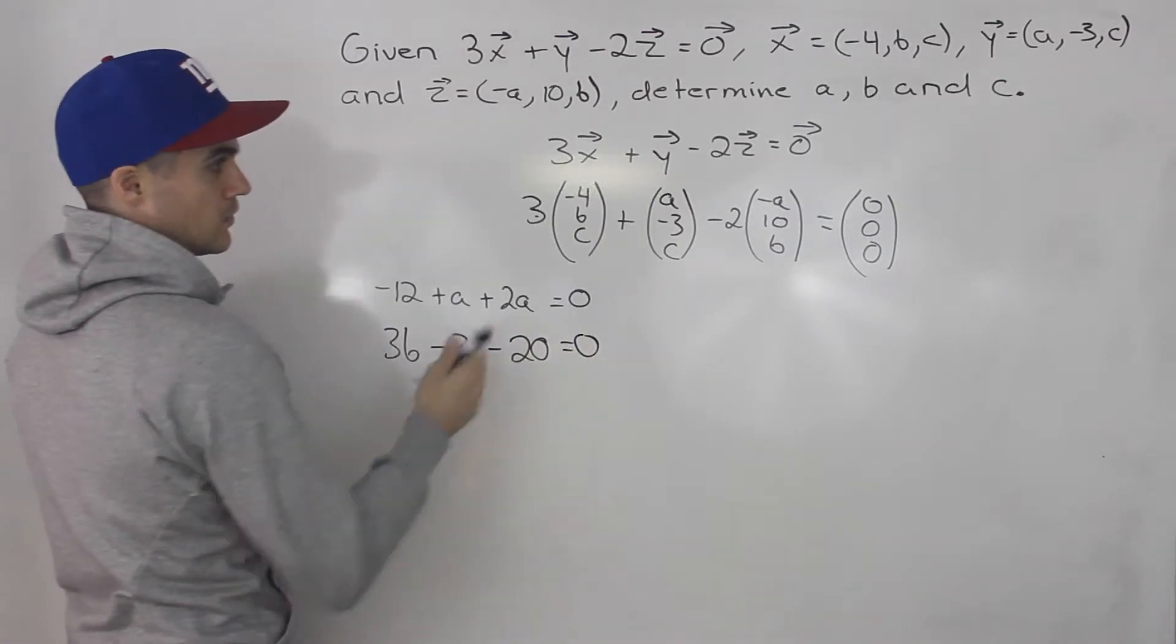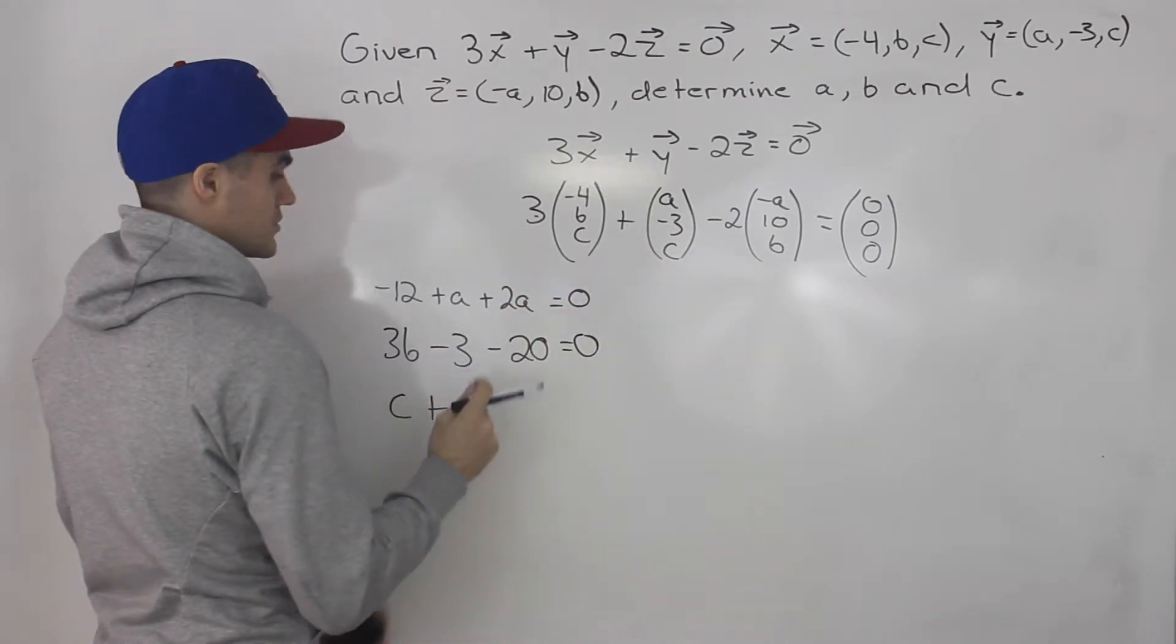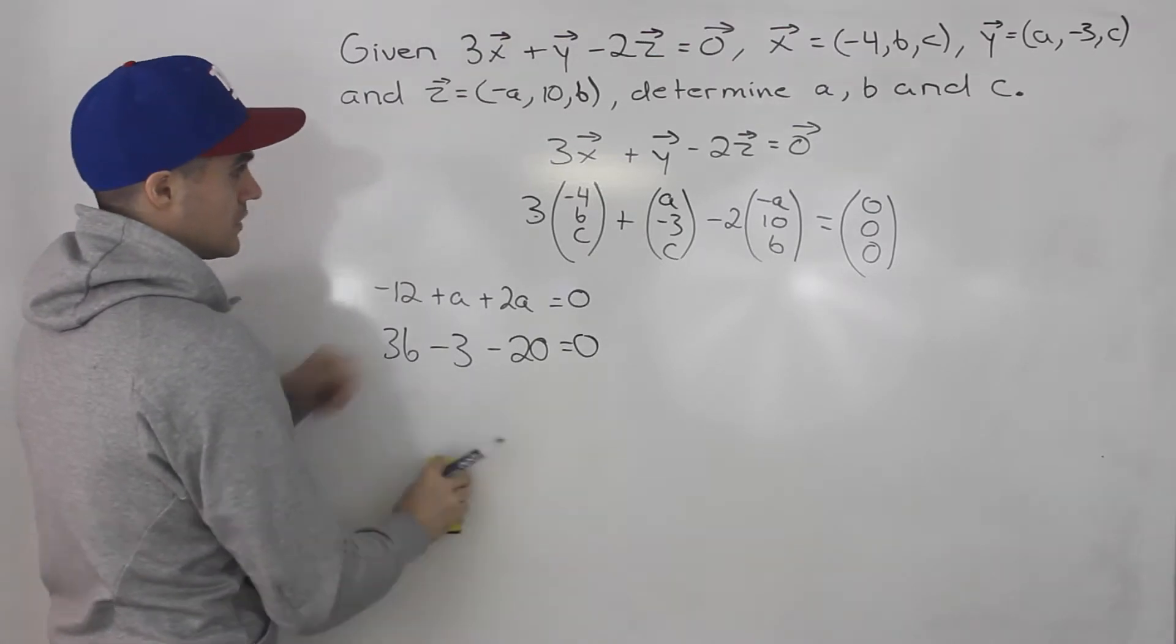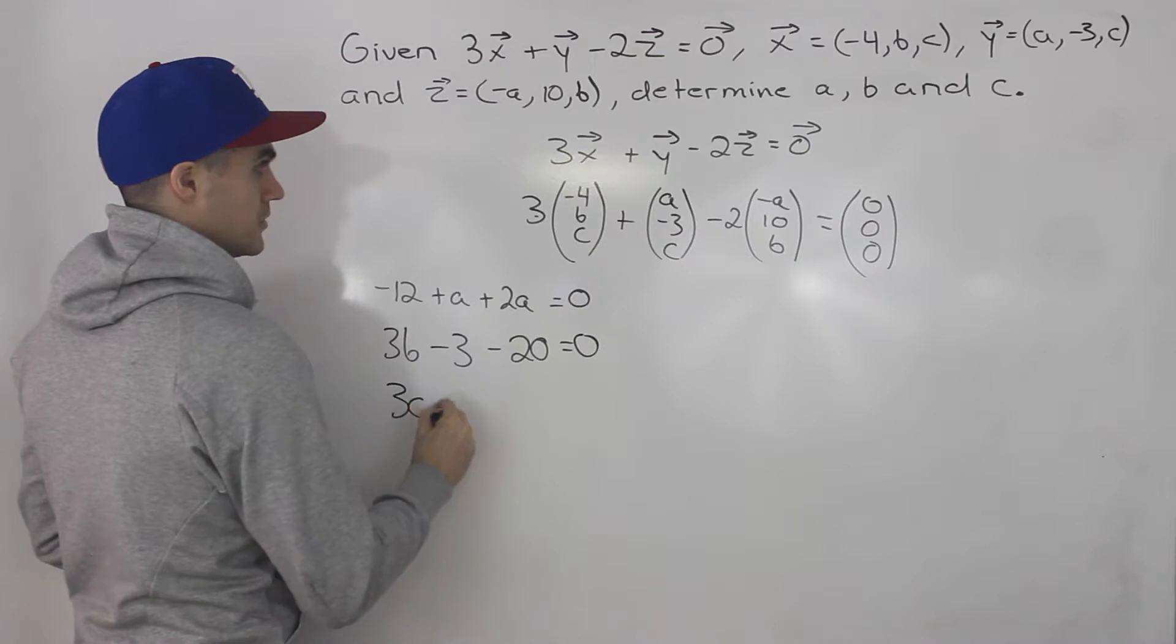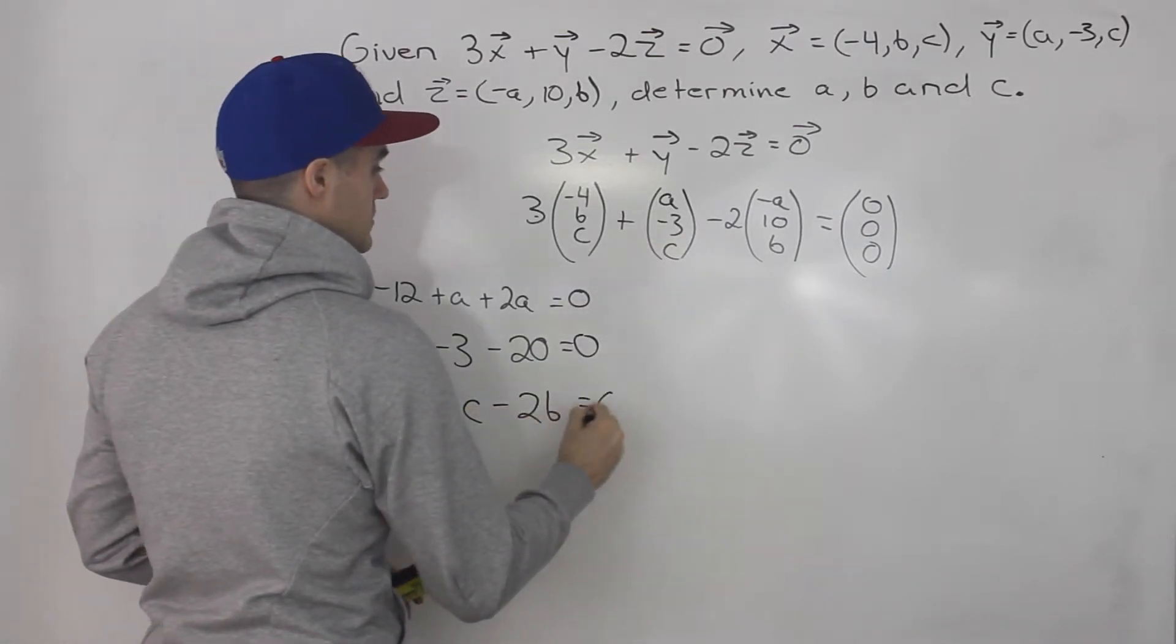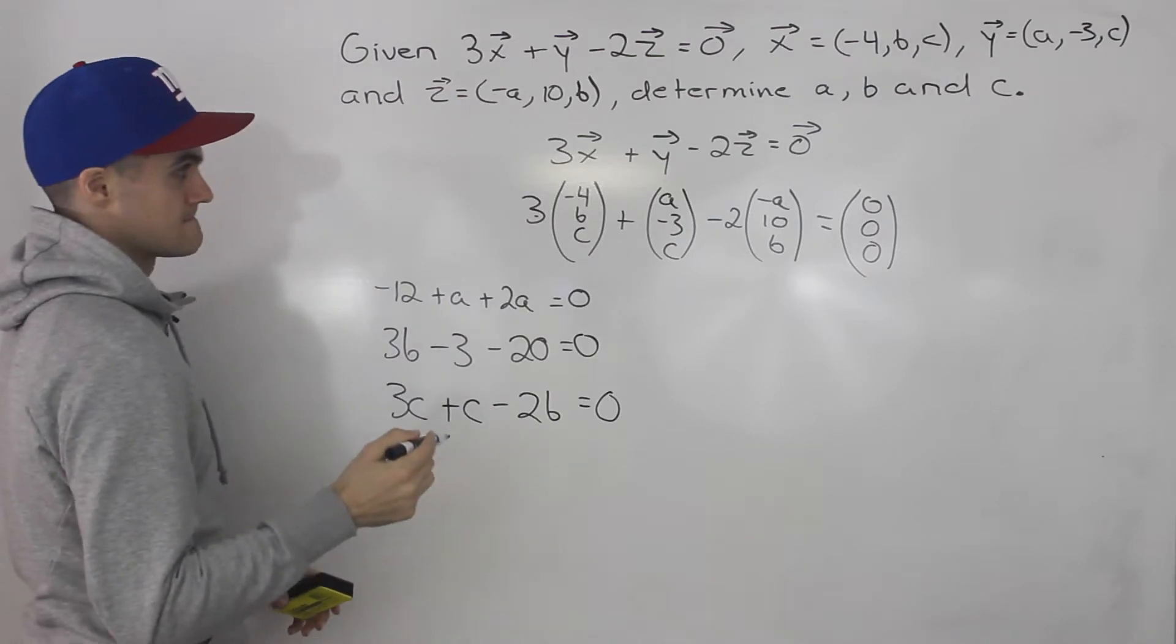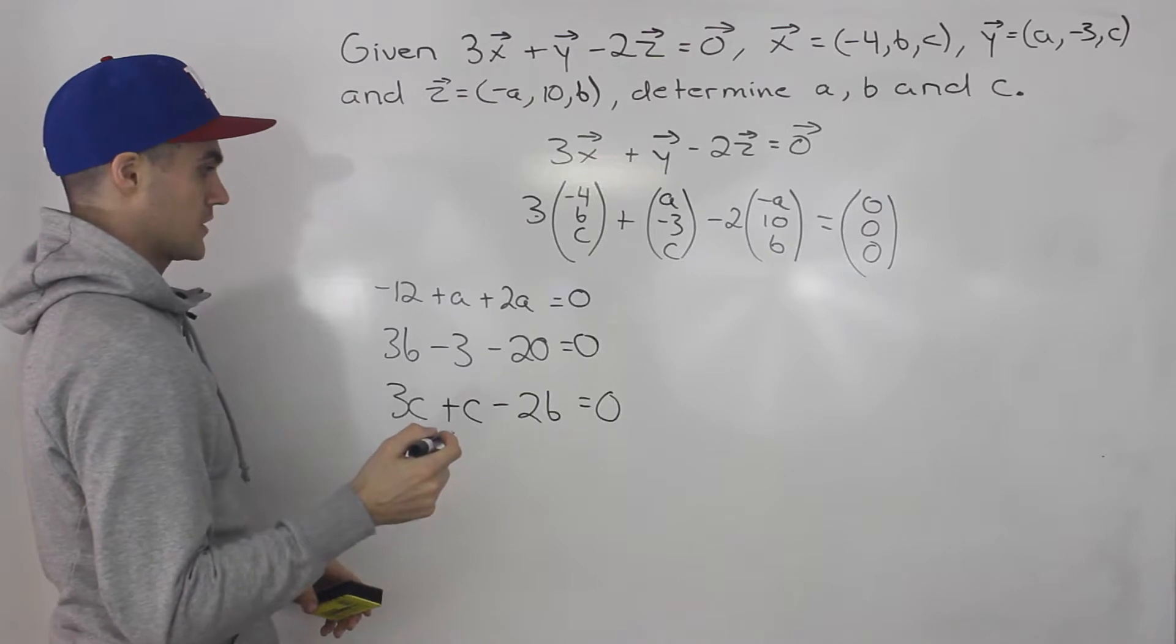And then we'll have c plus c plus b. So basically c plus, or sorry rather, you got to multiply this 3 here by the c. So that would be 3c plus c minus 2b equals 0. So I think I got all the equations written down properly.